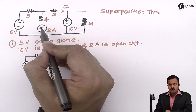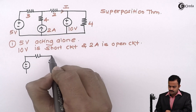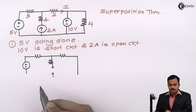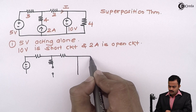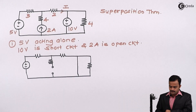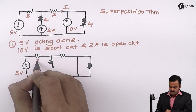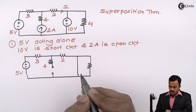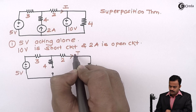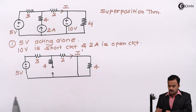Now I am open circuiting the current source and short circuiting the 10 volt. All resistances are connected as they are. So 5 volt is acting alone with 3 ohm, 4 ohm, 2 ohm, and 4 ohm. We are supposed to calculate this current, which I will mention as I dash — dash means it is because of only 5 volt acting alone.